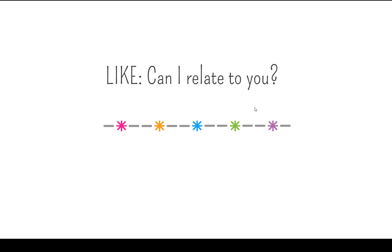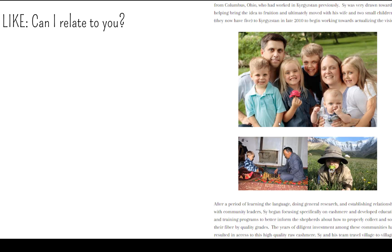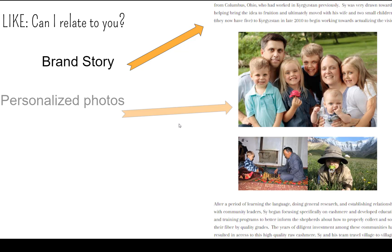Next, think about how you can include something for the Like part of the spectrum, which is answering the question: can I relate to you? Is there something about your business or brand that I like? Because if I like you, there's a higher likelihood that I'm going to want to do business with you. This is a former client of ours, Cy Belhovic, who owns June Cashmere. A couple of things he's incorporated into his About Us page that check that box: his brand story — he tells a little bit about how he got into the business and what motivated him to start importing cashmere from Kyrgyzstan. He also includes personalized photos, including a beautiful happy family, and talks about how the family is involved in the business.